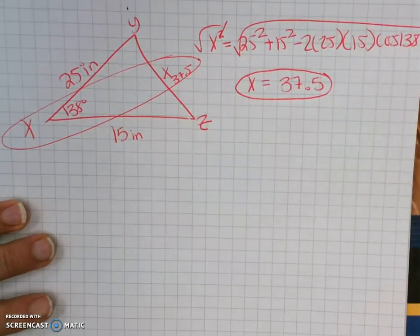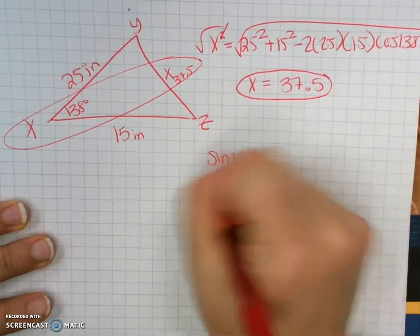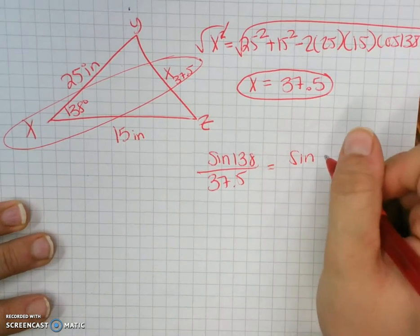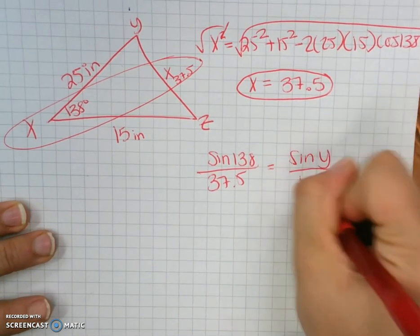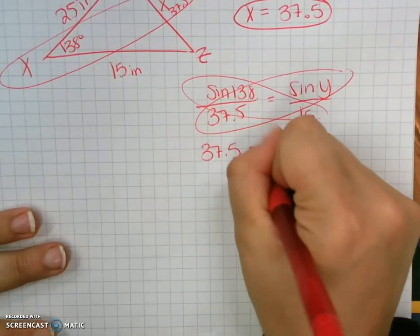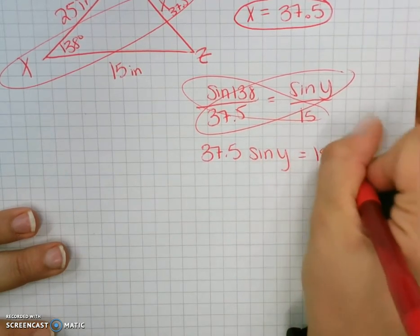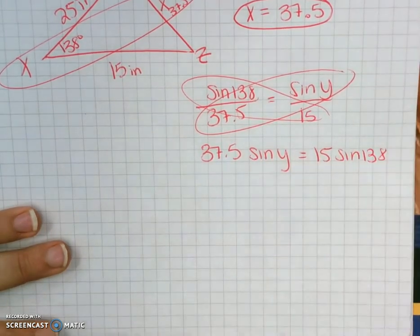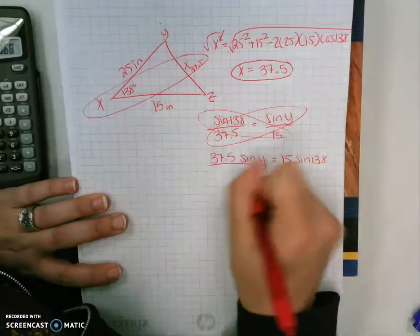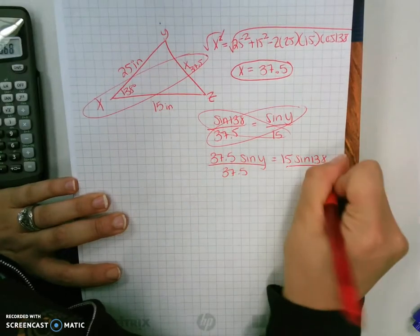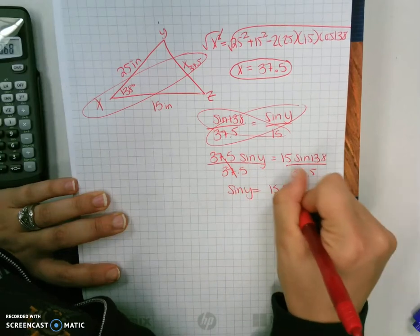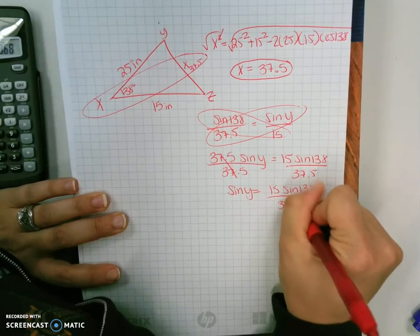So now in order to do this next problem, sine of 138 is to 37.5 as sine of Y is to 15. 37.5 sine Y equals 15 sine 138 divided by 37.5. Sine Y equals 15 sine 138 all over 37.5.